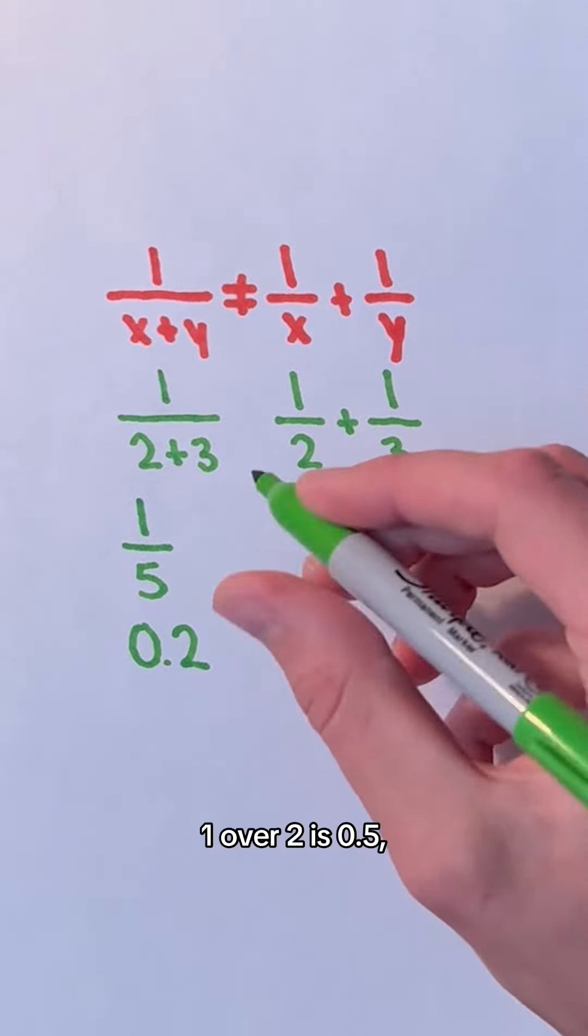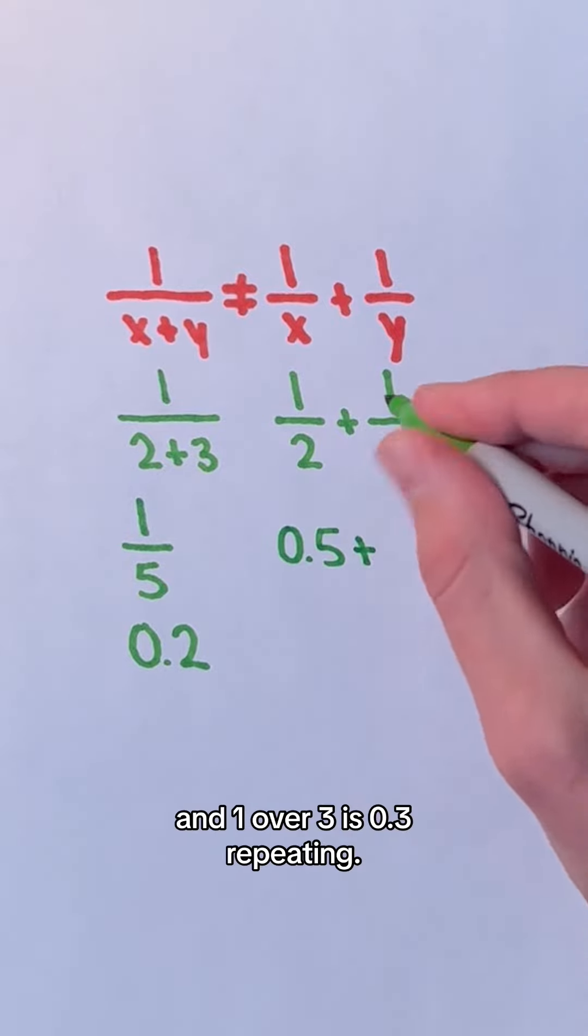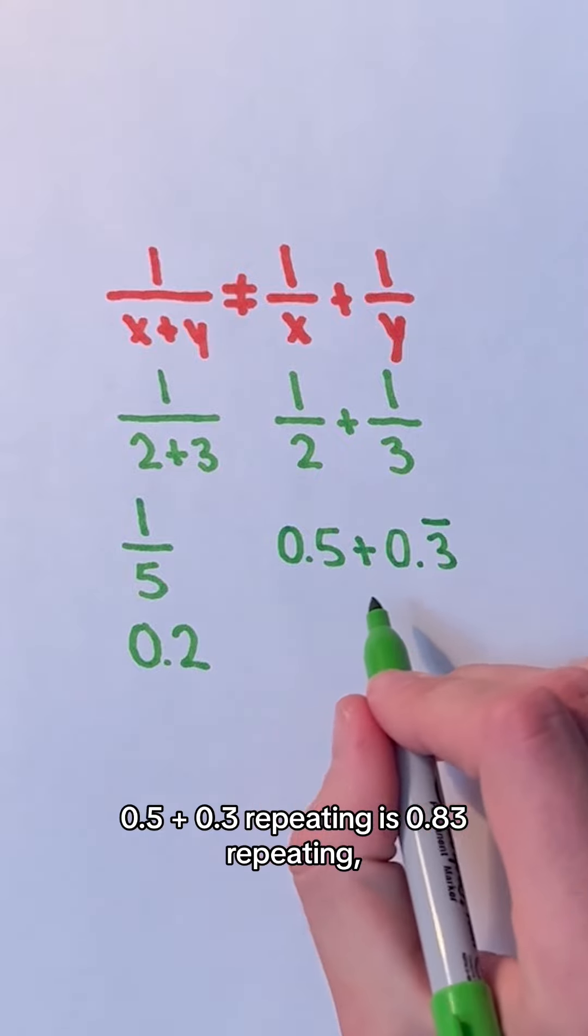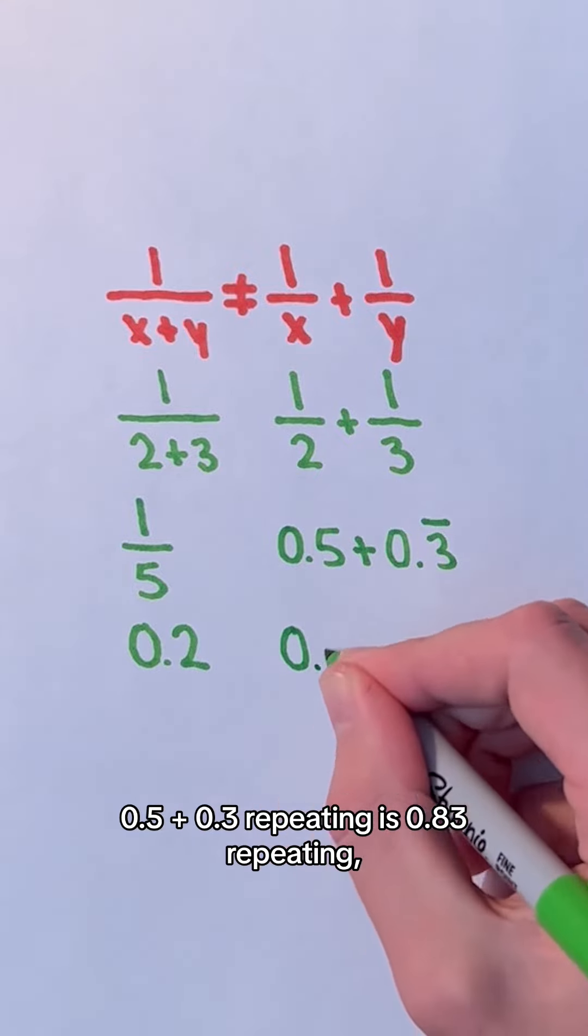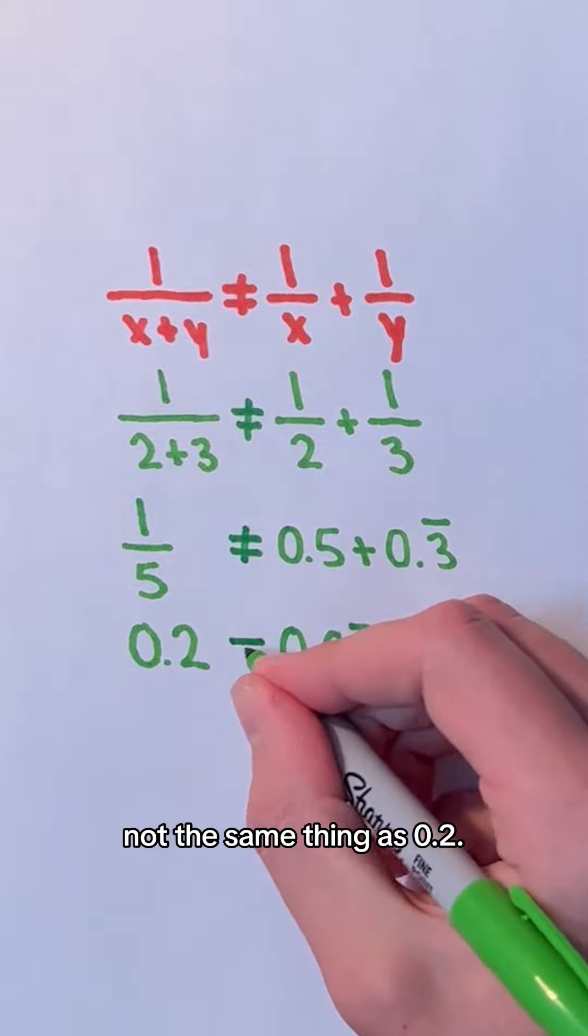In the second expression, 1 over 2 is 0.5 and 1 over 3 is 0.3 repeating. 0.5 plus 0.3 repeating is 0.83 repeating, not the same thing as 0.2.